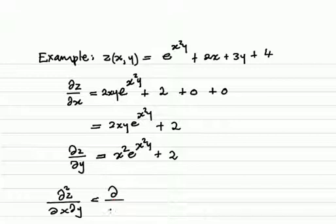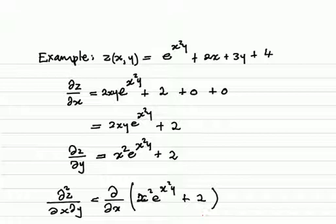In this case, we're differentiating the partial derivative of z with respect to y, which is x squared · e to the power of x squared y plus 2, now as a function of x. You will see that here we have another rule to apply: this function is a product of two functions of x, so the product rule must be observed. That is what is good about this example.